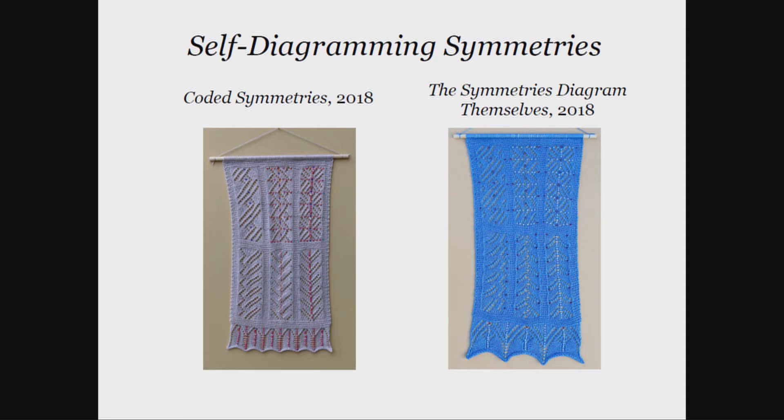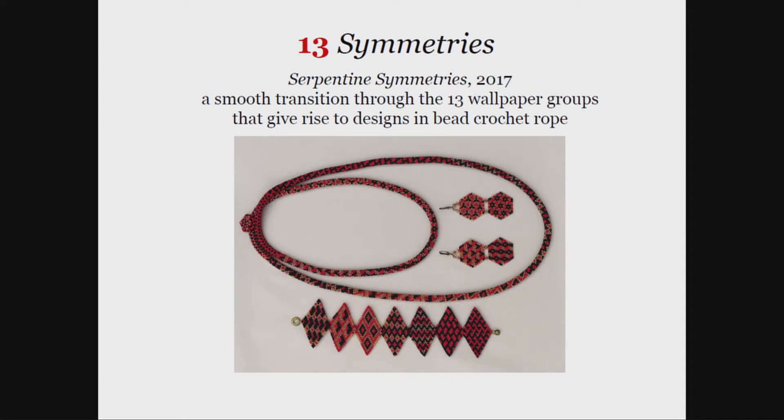Finally, this being G4G 13, you have to have a 13 — and luckily there's a 13 here. As you know from Bob's talk, there turned out to be 13 symmetries in bead crochet rope. They're wallpaper symmetries — it's a planar design that wraps around the cylinder of the bead crochet rope. This jewelry set shows those 13 symmetries, and the flat woven pieces show you the flat version so you can really see the symmetries. A nice printed card explaining all of this is my gift to you in the gift exchange, and that's also over on the table.